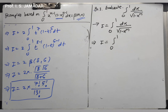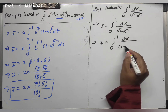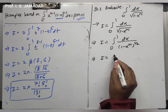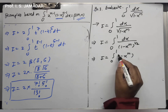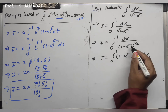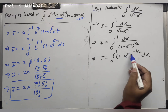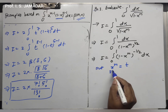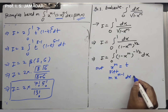Shifting the denominator to the numerator, I equals integration from 0 to 1 of (1-x^m)^(-1/2) dx. Our requirement is to get the (1-t) form. To achieve this, put x^m equal to t. Differentiating: m times x^(m-1) dx equals dt, so dx equals (1/m) times (1/x^(m-1)) dt. Since x^m = t, we get x = t^(1/m), and x^(m-1) = t^((m-1)/m).